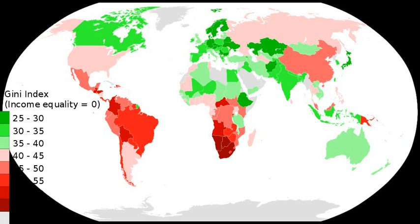Key: R/P 10% — the ratio of the average income of the richest 10% to the poorest 10%. R/P 20% — the ratio of the average income of the richest 20% to the poorest 20%. Gini — Gini index, a quantified representation of a nation; a Gini index of 0% expresses perfect equality while an index of 100% expresses maximal inequality. UN — data from the United Nations Development Programme. CIA — data from the Central Intelligence Agency's World Factbook.